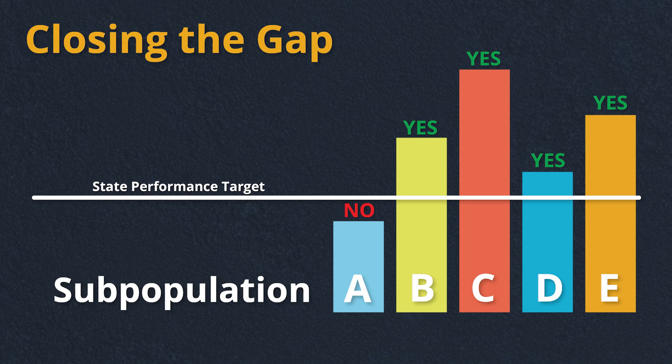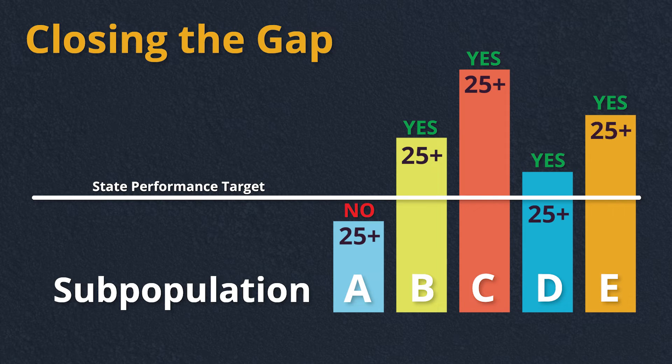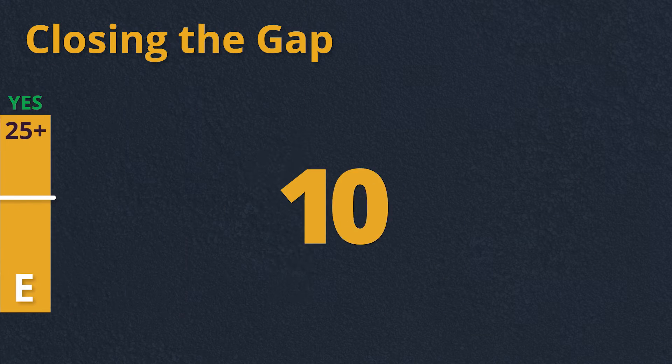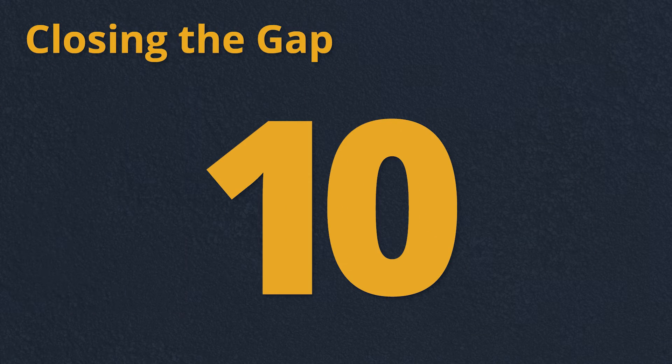Another change the state is making relates to the size of student groups. Previously, when the state used the yes or no system, the subpopulation groups consisted of at least 25 students. Now the minimum number of students in a group is just 10 children each.